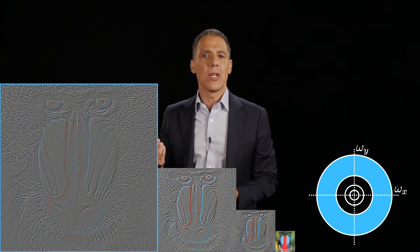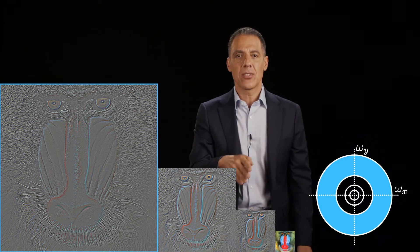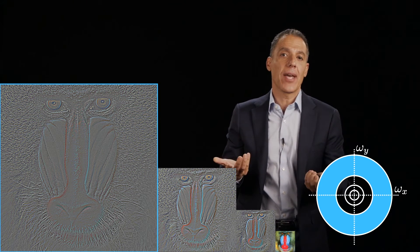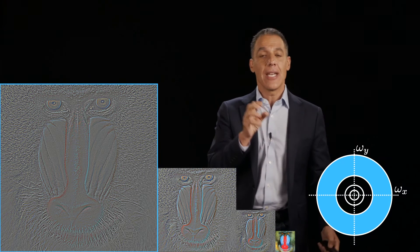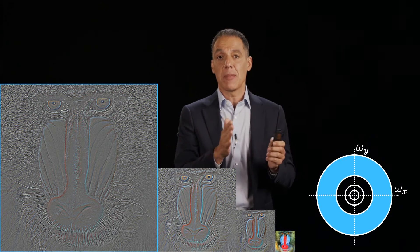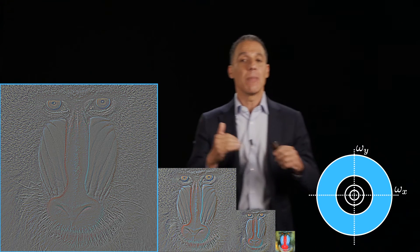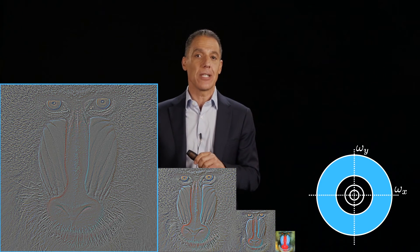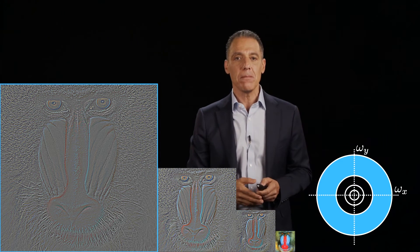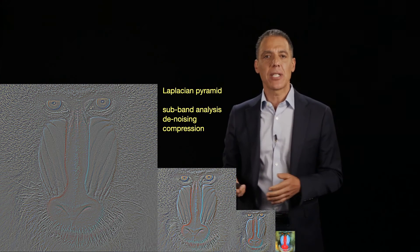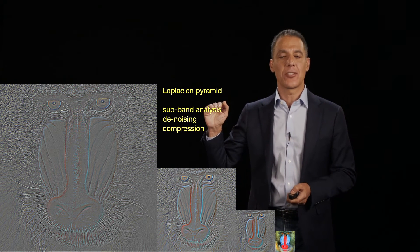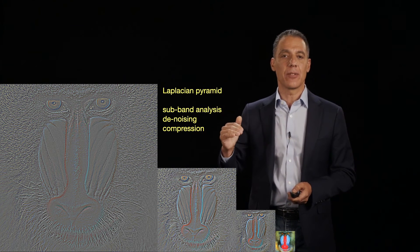Why is this useful? It's useful because each of these bands represents a subset of the frequencies. In some images or sounds, you want information associated with a particular frequency — something that may be low, middle, or high frequency — and you may want to manipulate those parts of the image differently because they have different content. Go into Google Scholar and search for Laplacian Pyramid; you'll see this used for so-called subband analysis to analyze content at different frequencies.